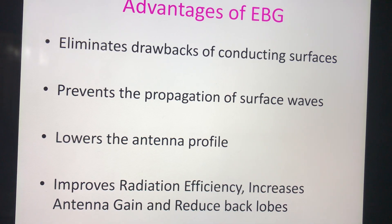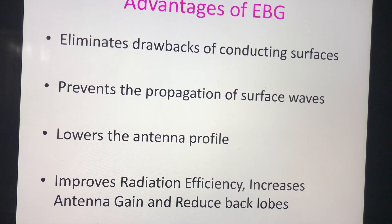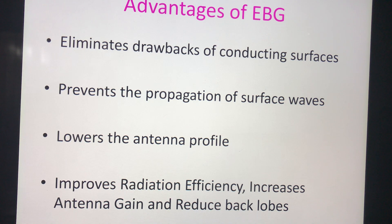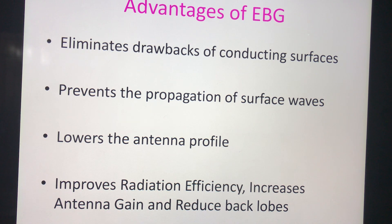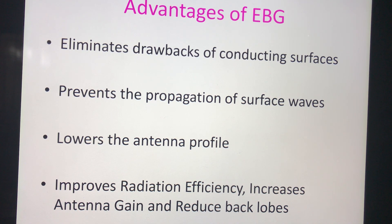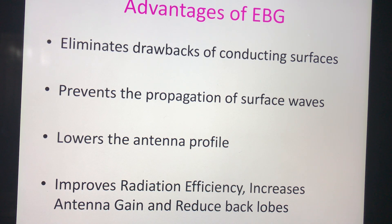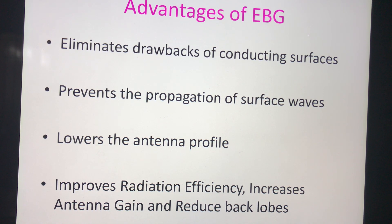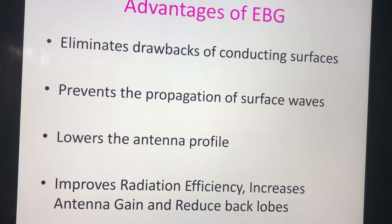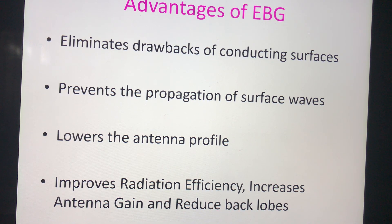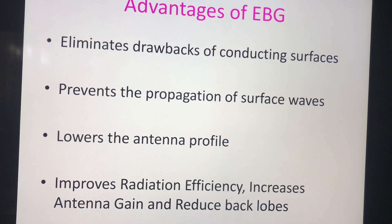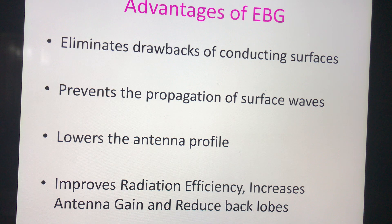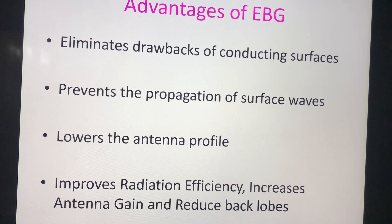By suppressing surface waves, there is no mutual coupling between adjacent elements and very little radiation to adjacent elements. By having an in-phase reflection coefficient, a very small antenna profile is achievable. It eliminates the drawbacks of conducting surfaces since the reflection phase is 0 degrees, giving a very small antenna profile. It prevents propagation of surface waves, so even if other structures are fabricated alongside this antenna, no waves propagate along the substrate surface. The efficiency and gain of the antenna are increased, back radiation and back lobes are reduced, and mutual coupling is also reduced.